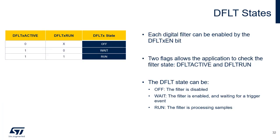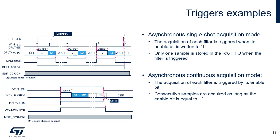Each digital filter can be enabled by the DFLT-XEN bit. The MDF DFLT-XCR register for filter X contains two flags that allow the application to check the current state of the filter: DFLT-ACTIVE and DFLT-RUN. The DFLT state can be OFF (filter is disabled), WAIT (filter is enabled and waiting for a trigger event), or RUN (filter is processing samples). In asynchronous single shot acquisition mode, the acquisition of each filter is triggered when its enabled bit is written to 1. Whenever the digital filter is in WAIT state and the DFLT-XEN bit is written to 1, a sample is processed and stored in the RxFIFO. If the application sets DFLT-XEN to 1 while a conversion is ongoing, the write operation is ignored. When DFLT-XEN is deasserted, the current sample is lost.